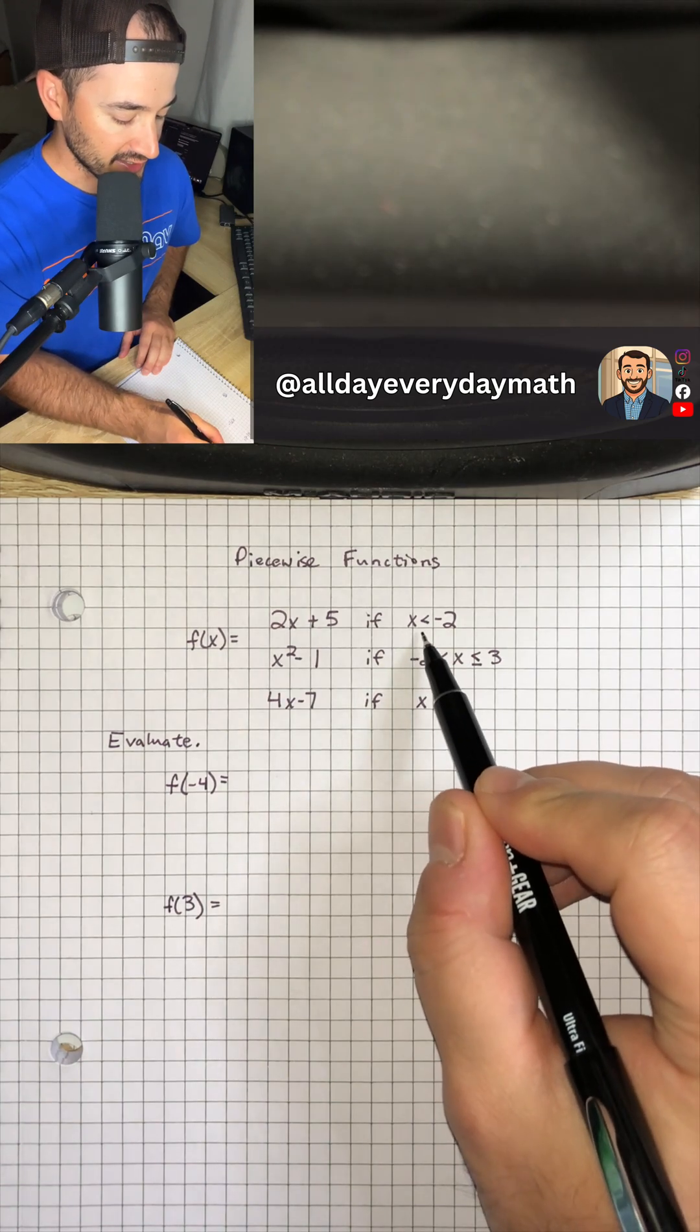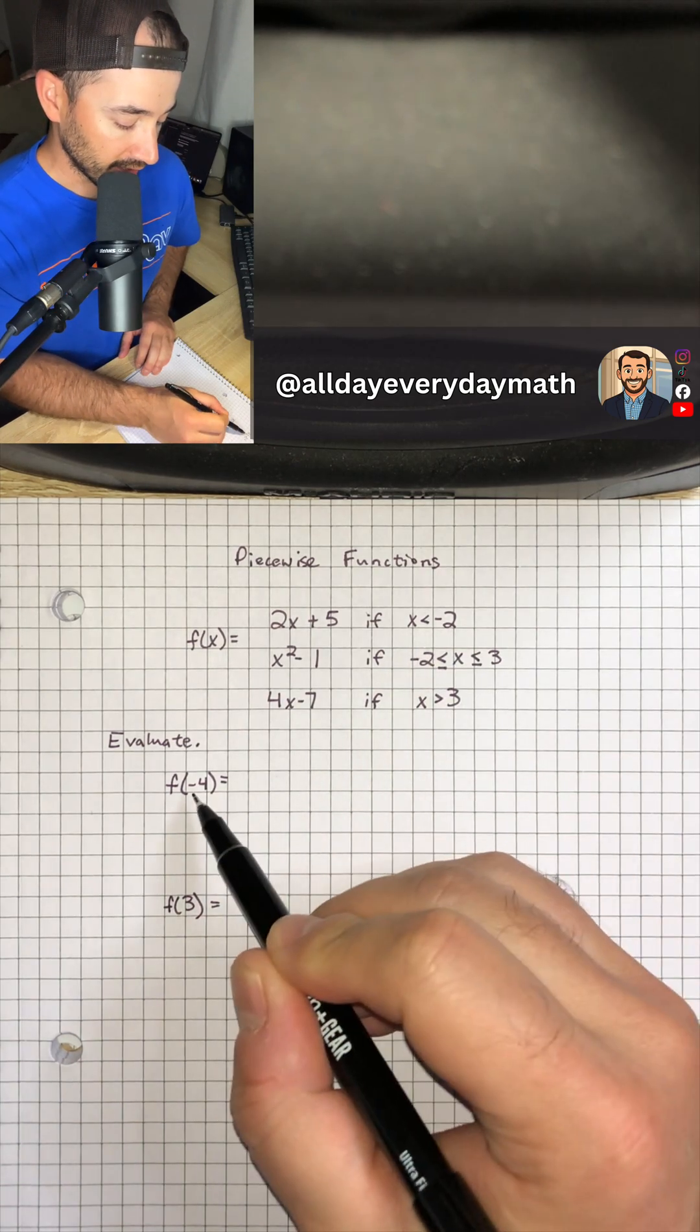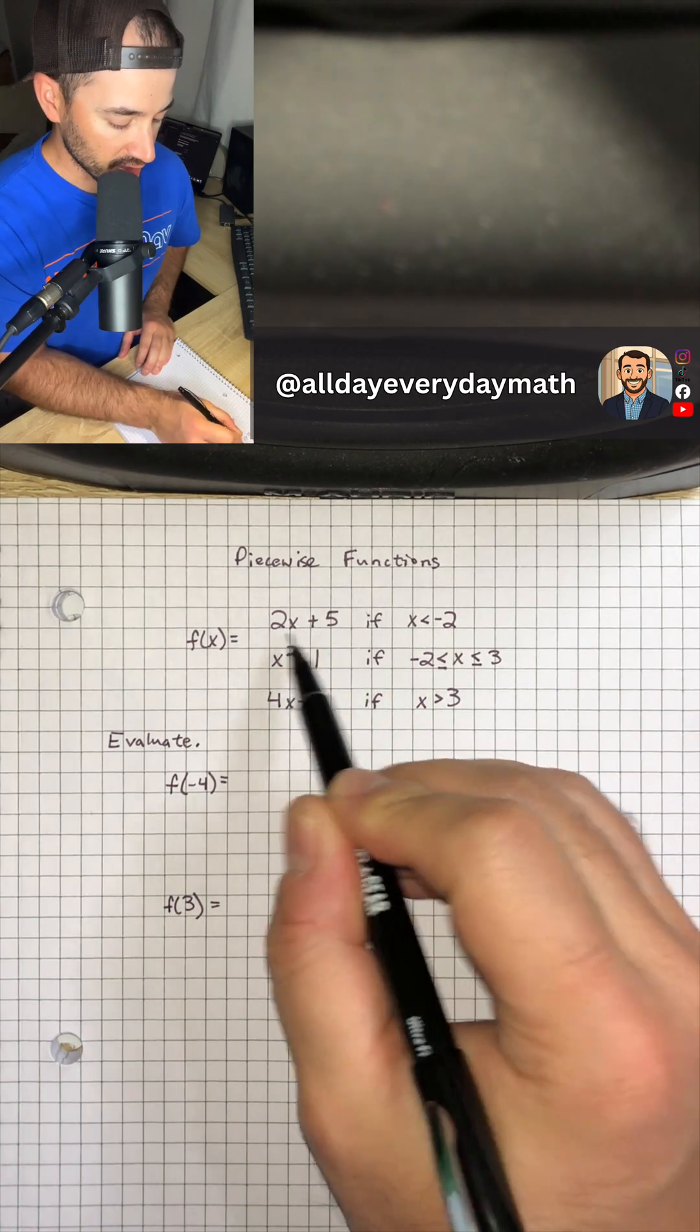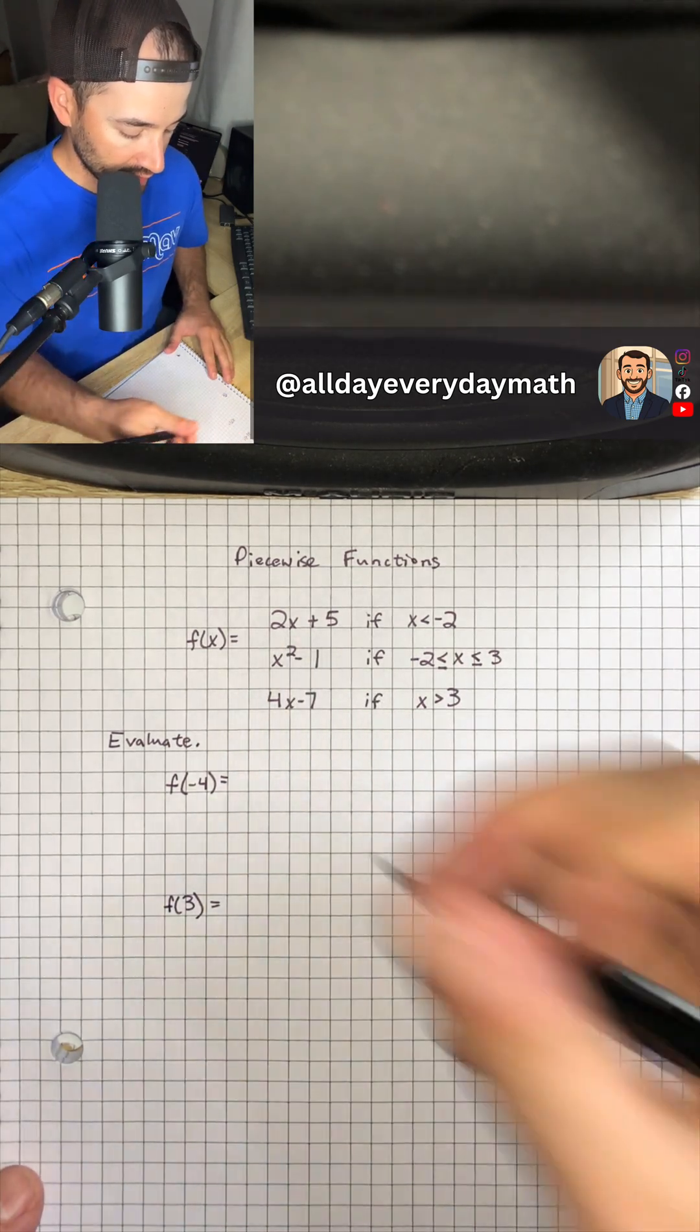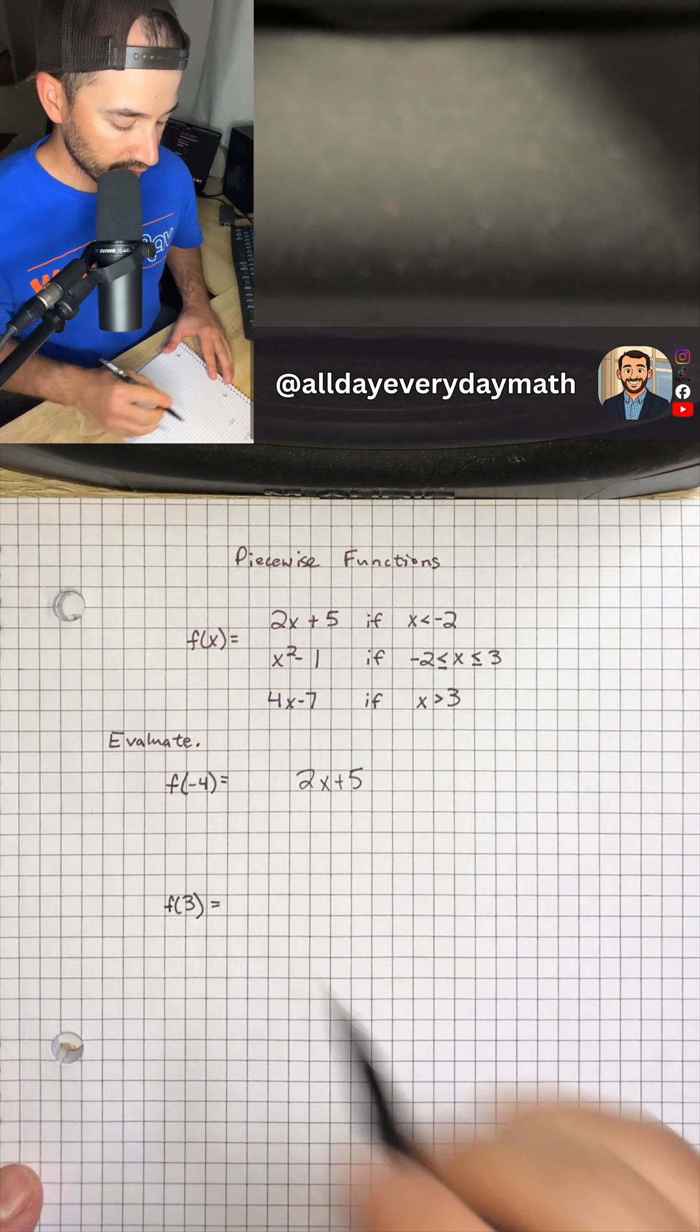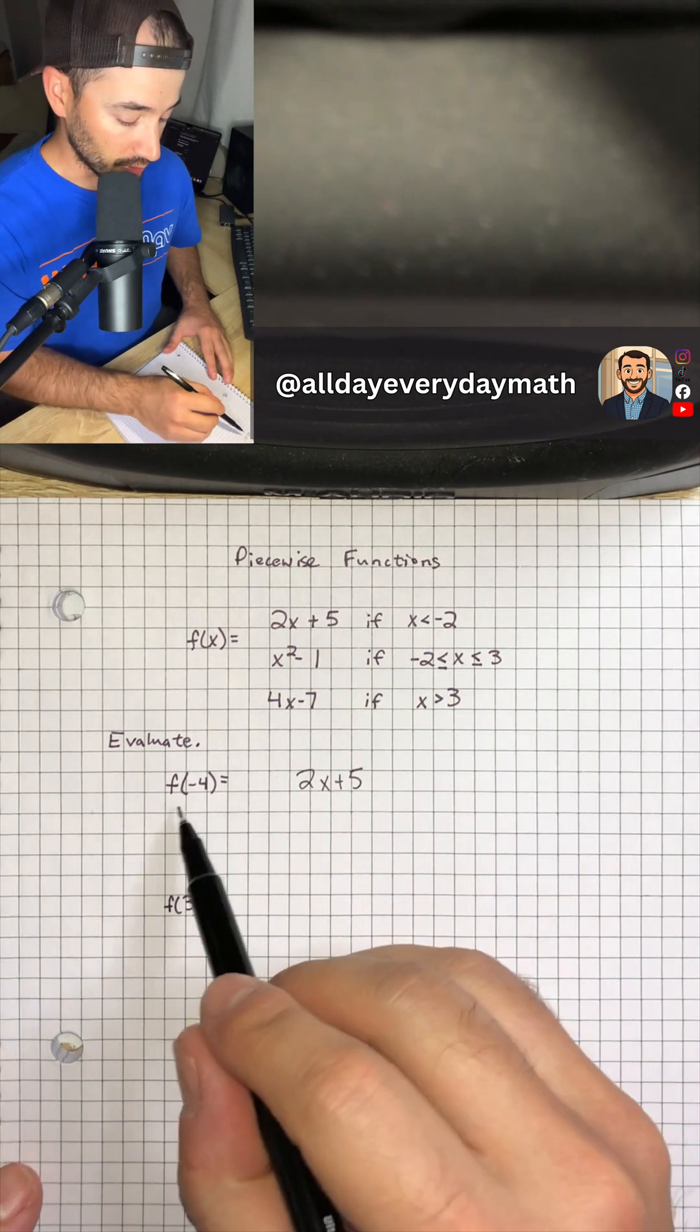Because if x is less than negative 2 and negative 4 is less than negative 2, we use this function 2x plus 5. So I'm going to write that down: 2x plus 5. And now all we have to do is plug in our x value for x.